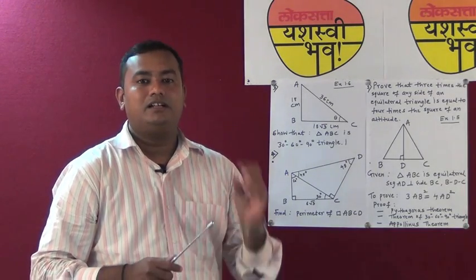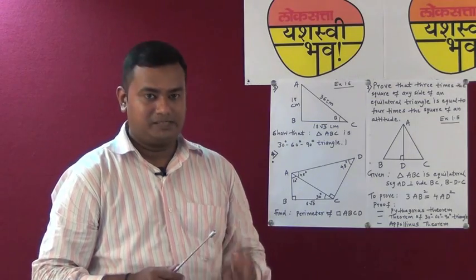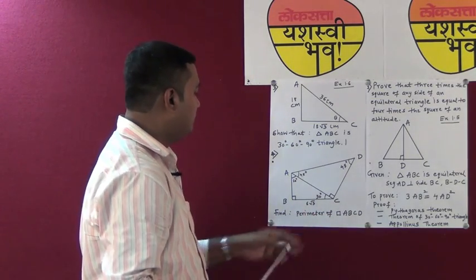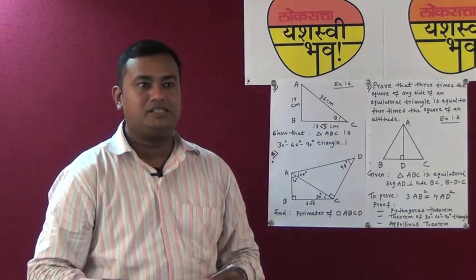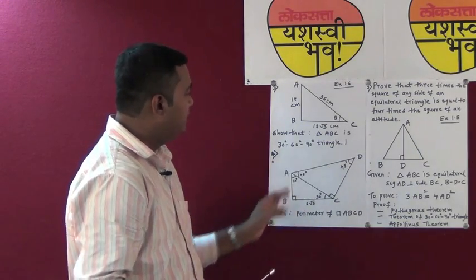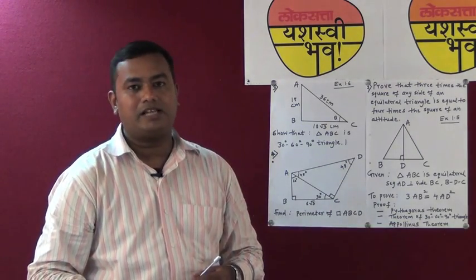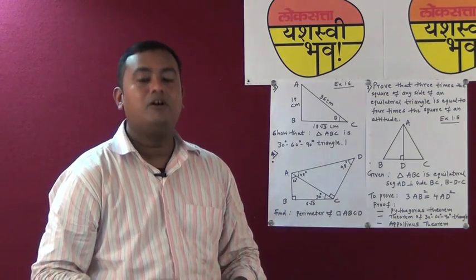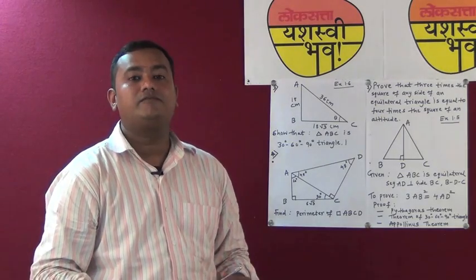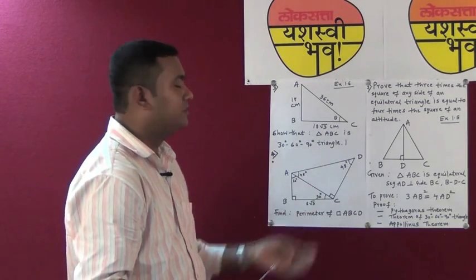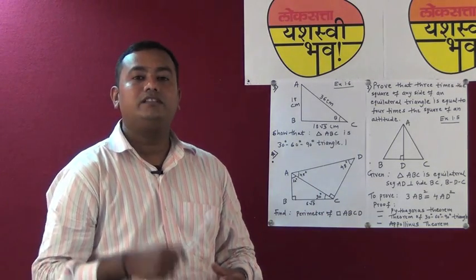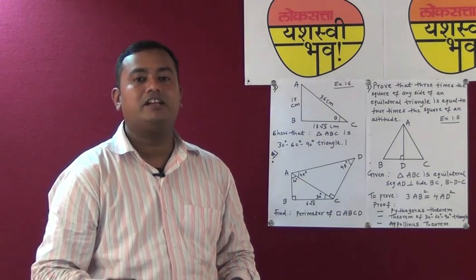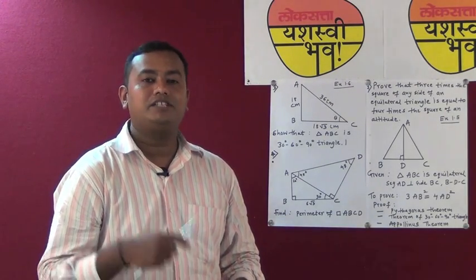Similarly, in the same exercise, one more example is given about the perimeter of quadrilateral ABCD where various angles are given. Again, this sum can be solved either by using the 30-60-90 triangle theorem, or the 45-45-90 triangle theorem, or if you are well-versed with trigonometry, you can use trigonometry as well. The method is up to you — you can use any method which is logically and technically correct and suitable to you.